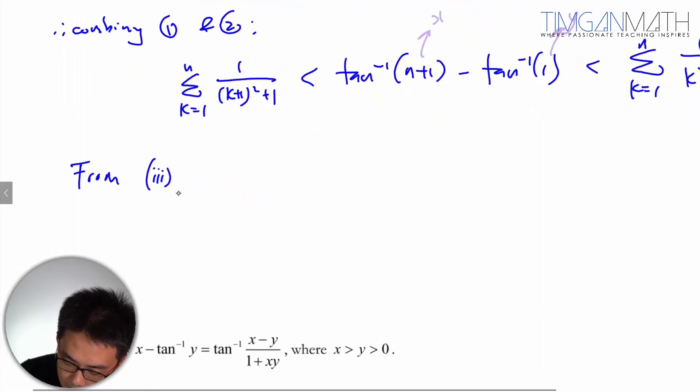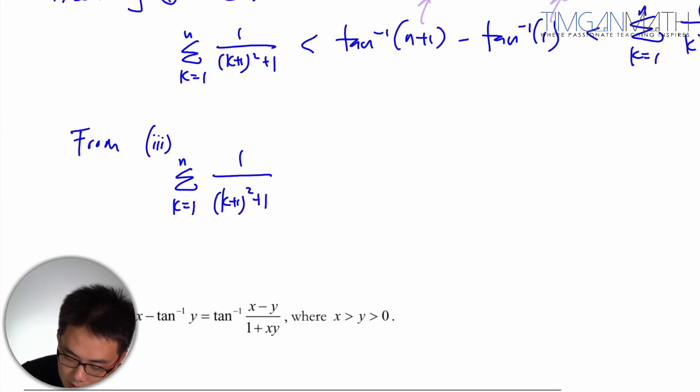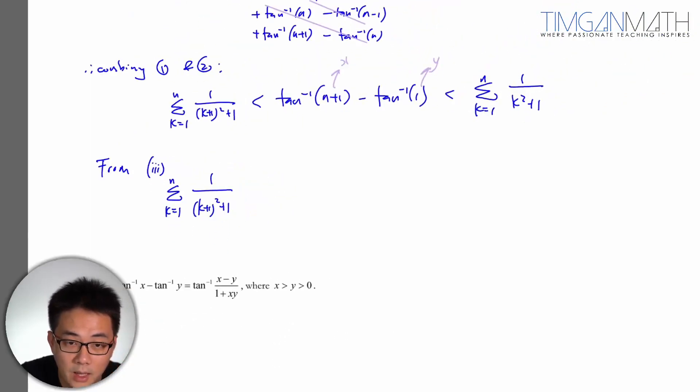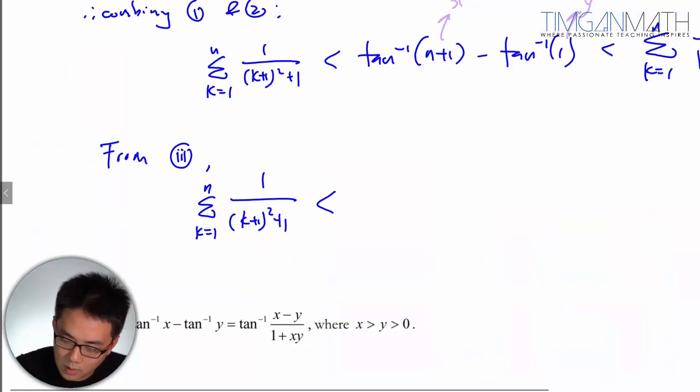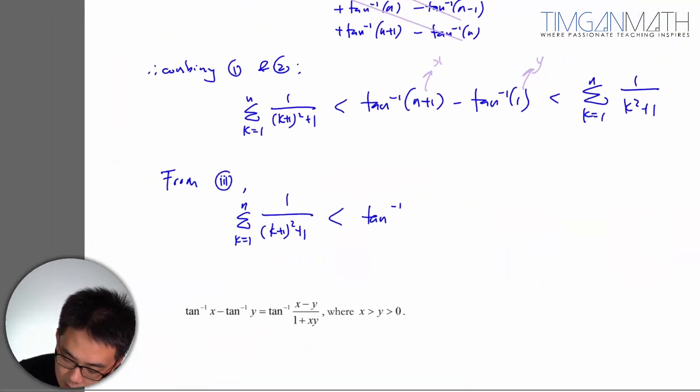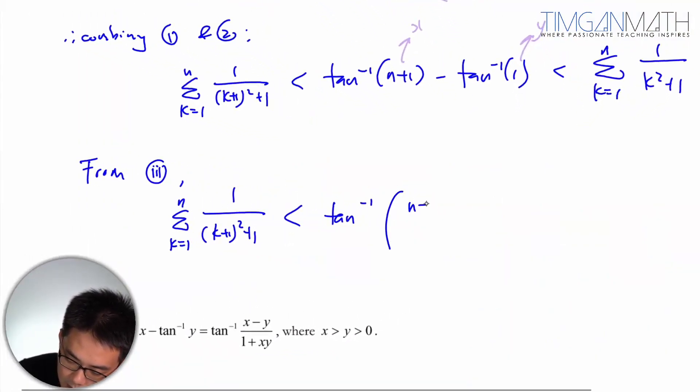This will just be summation k plus 1 squared plus 1. So you just replace this as n plus 1. x is n plus 1 and y is 1. And this part here will be tangent inverse x minus y. So n plus 1 minus 1 over 1 plus n plus 1 times 1. Alright, so this is pretty okay.